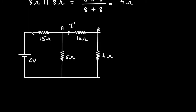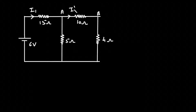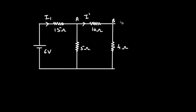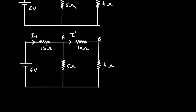Before finding I prime, we need to find the current I1. The 10Ω and 4Ω are connected in series, so their equivalent resistance is 14Ω. We can replace these two resistances by a single resistance of 14Ω, because 10 + 4 = 14.